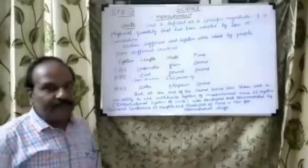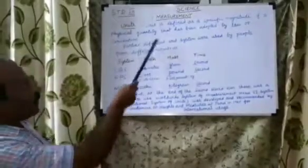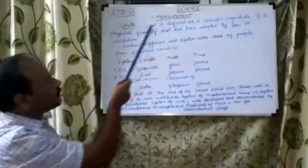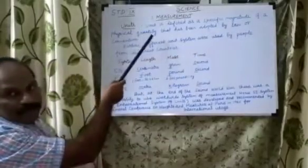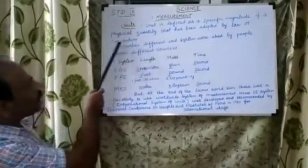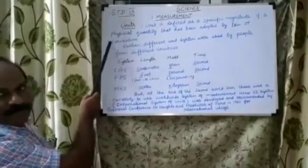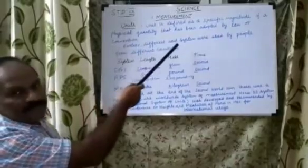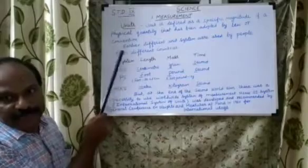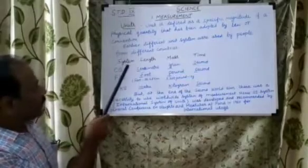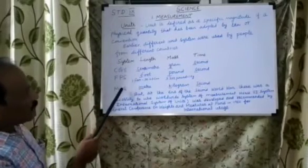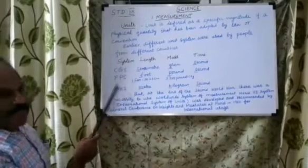Next topic: units. A unit is defined as a specific magnitude of a physical quantity that has been adopted by law or convention. Earlier, different unit systems were used by people from different countries: the CGS system, the FPS system, and the MKS system.